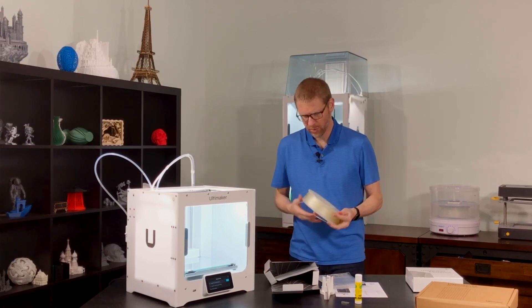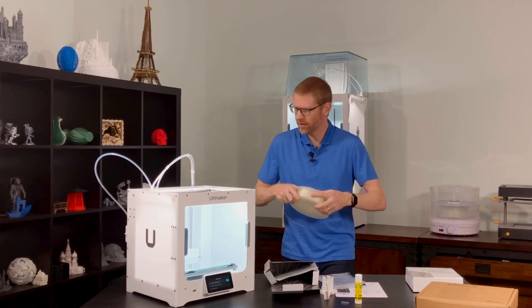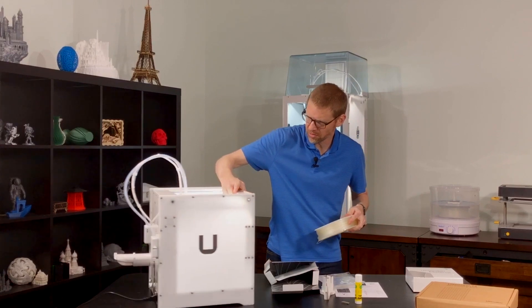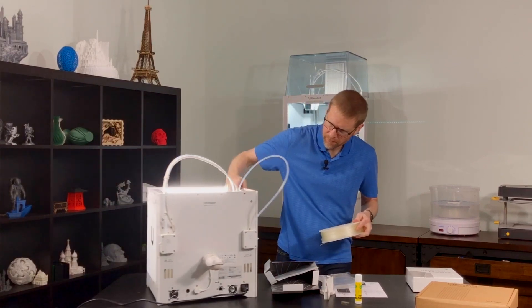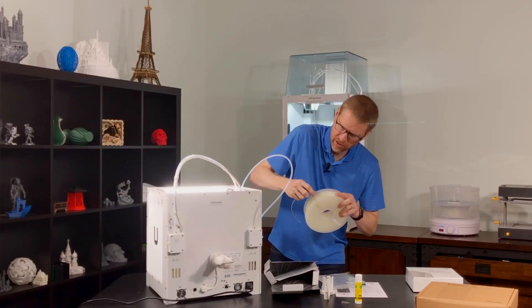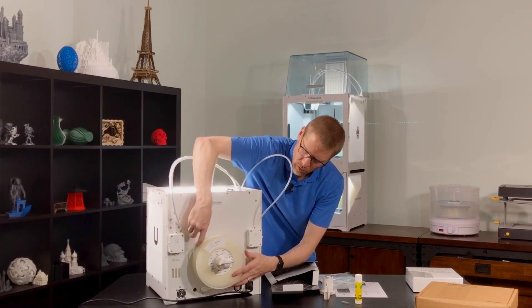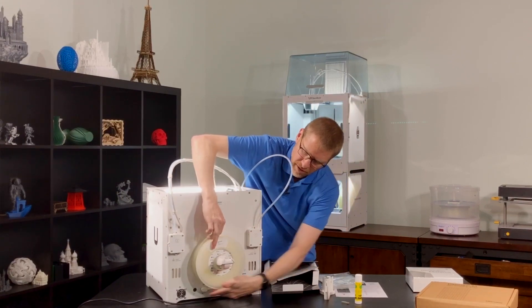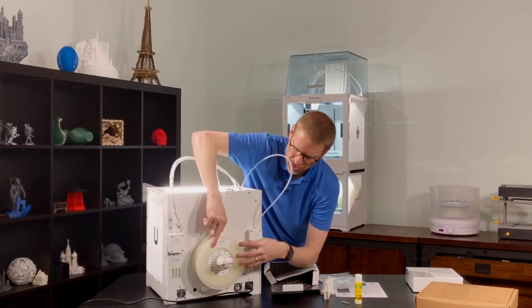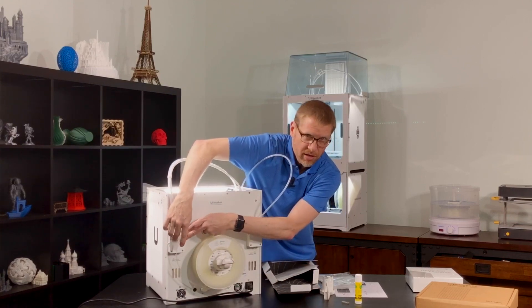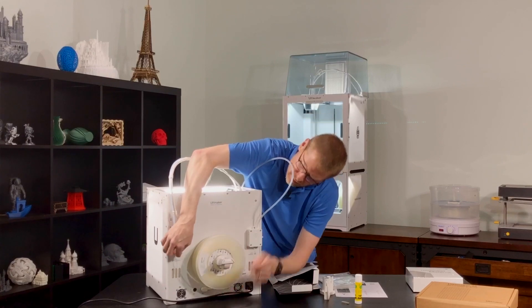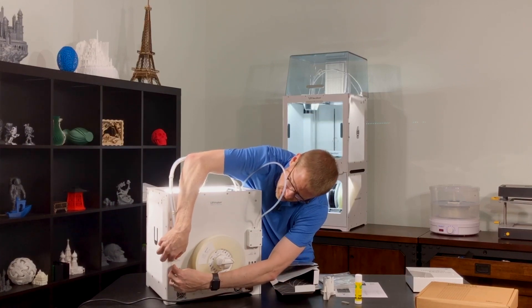Now we're going to go ahead and put this onto the spool holder in the back. Turn this around so you can see that. So we want this on the inner position, and you want it positioned so that the filament is coming off this direction, so that it comes around to the second feeder.